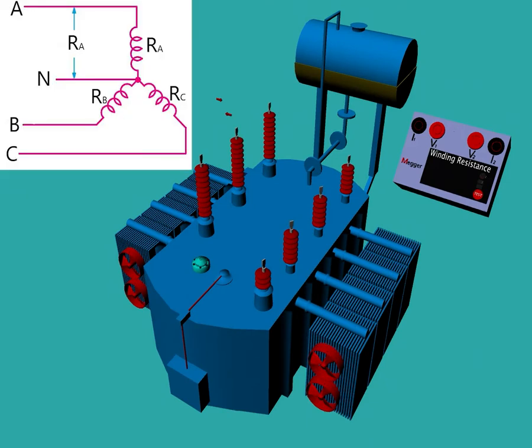In a winding connected in star connection, the resistance of a phase is measured by connecting the test set between phase and neutral. So first we connect current leads to phase and neutral, and then we connect the voltage leads to phase and neutral.